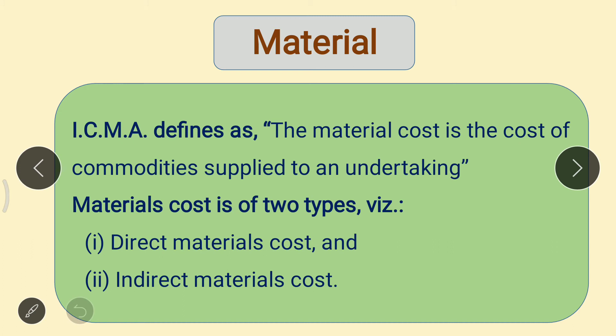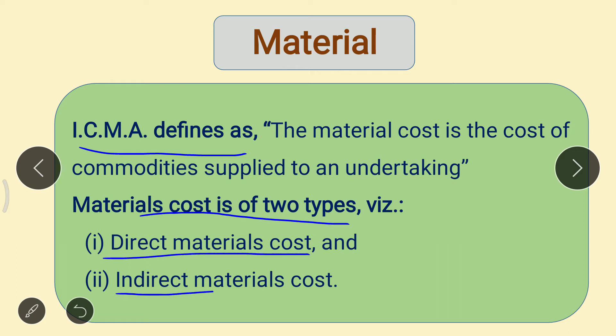Today we will see the concept of material. ICMA defines material cost as the cost of commodities supplied to an undertaking. Material cost is of two types: first is direct material cost and second is indirect material cost.